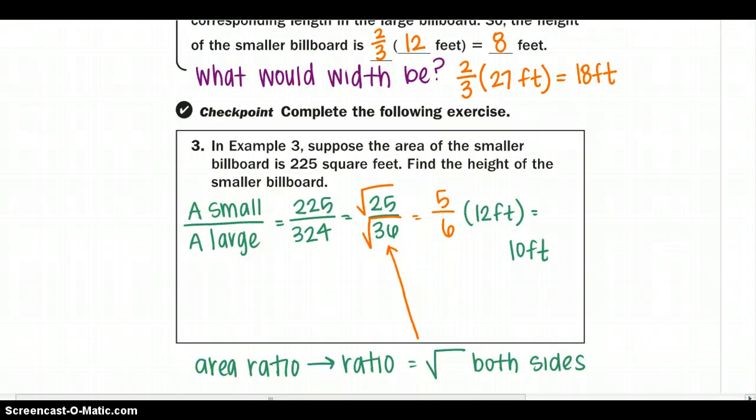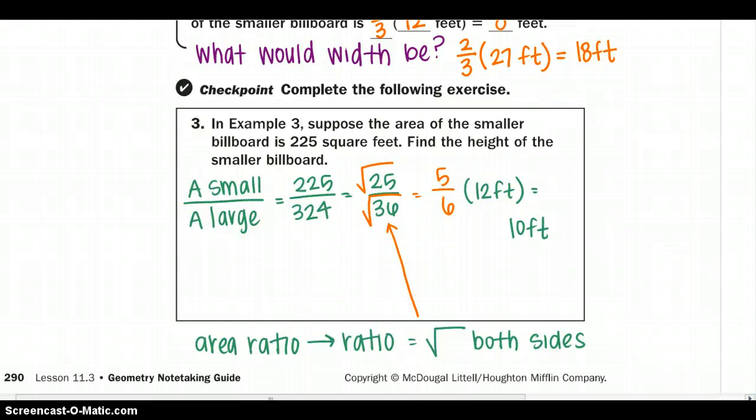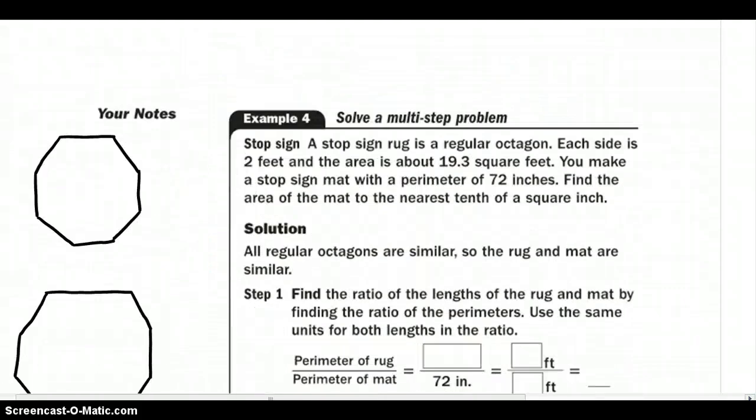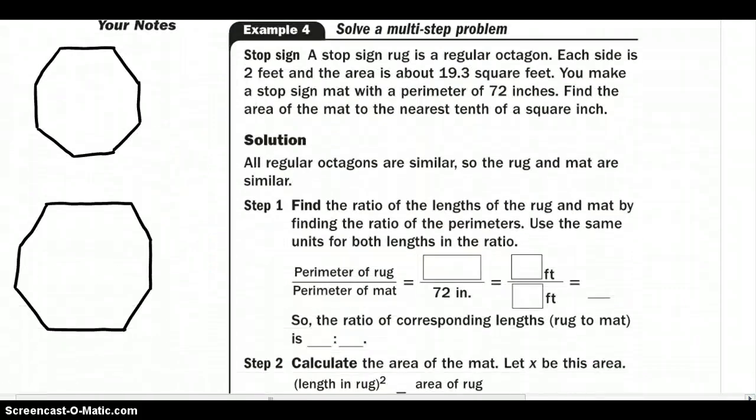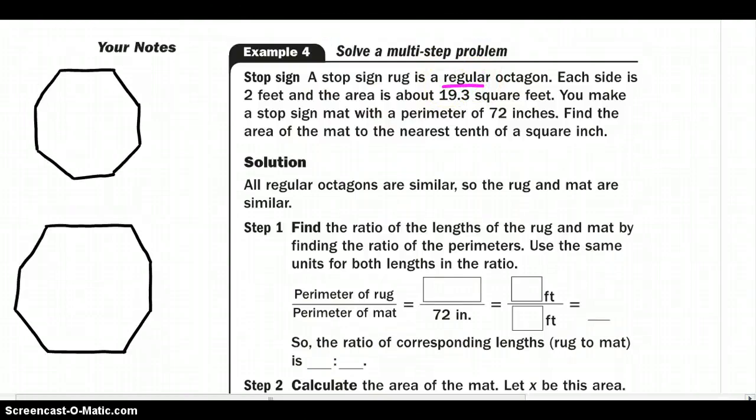Pause the video, work it out, and then check your answer. Moving on to our last example, we have stop sign rugs that are regular octagons. Each side is 2 feet. And the area is about 19.3 feet squared.